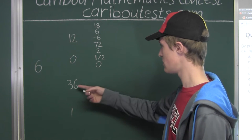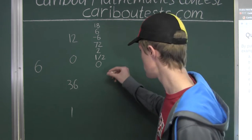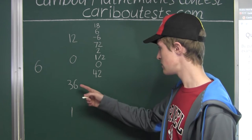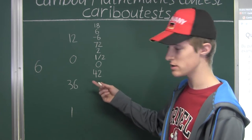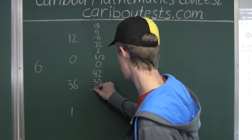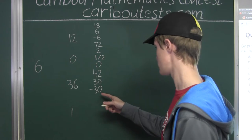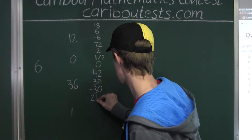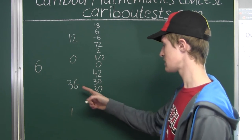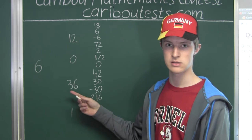Now let's go to 36. We have 36 + 6 = 42, 36 − 6 = 30, 6 − 36 = −30, 36 × 6 = 216, 36 ÷ 6 = 6 (already have that), and 6 ÷ 36 = 1/6.